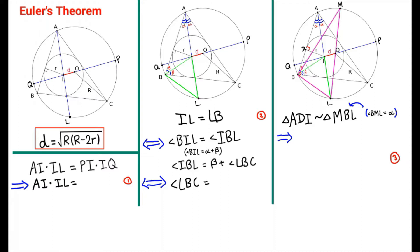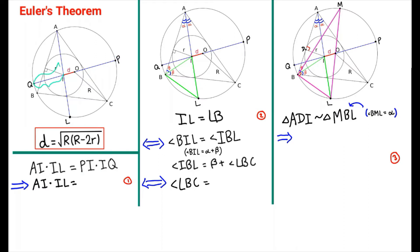Now let's prove it. There are three steps. The first involves the Power of a Point, which we learned before. Using lines A-L and P-Q, this means A-L equals P-I times I-Q. Since P-I equals d plus R, and I-Q equals R minus d, we get A-I times I-L equals R minus d times R plus d.